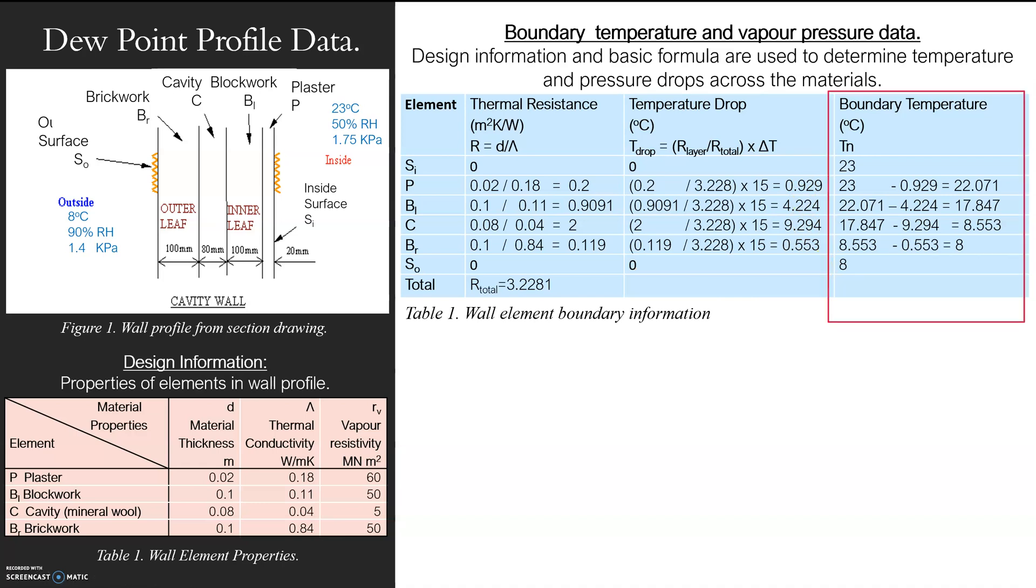And then you do the same for the boundary. You've got 23 outside. So what we want to say is, well, we know how much it drops per material, but we're going to put a value to it now. So on the inside, it's 23 degrees. Well, by the time it's gone through plaster and it's dropped by 0.929, what is it? Well, actually, it's 22.071 degrees. So that's all I'm doing. I'm just taking away these temperature drops from the temperature that we've got here originally. And then we should end up from 23 to 8 and we should have at each boundary, so each line between each material, there is a temperature there. So that's lovely.